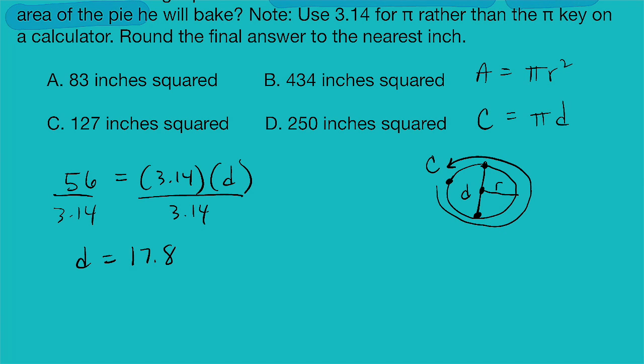And so if we were to cut this diameter in half, that would give us a center point to the end of the circle. So if we cut this in half, if we divide this by two, that's going to give us our radius. And so our radius becomes 8.9.